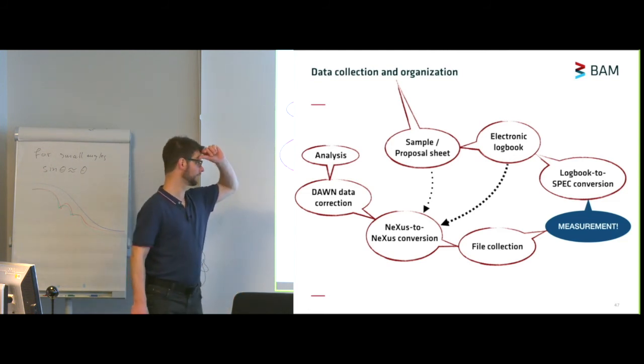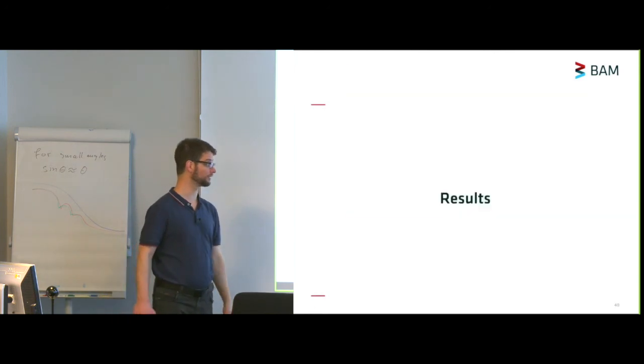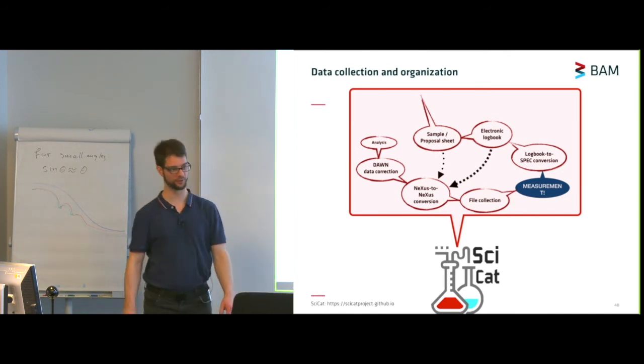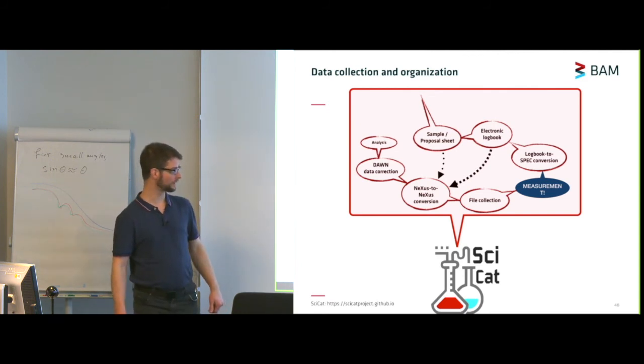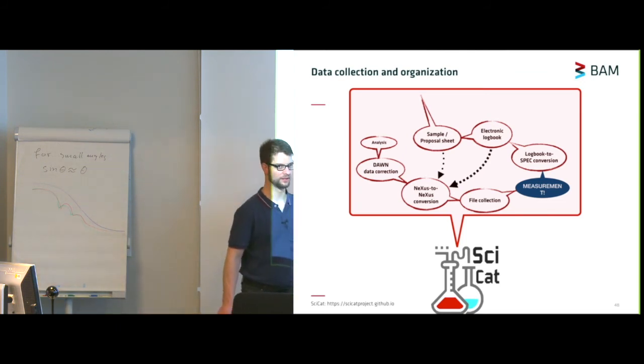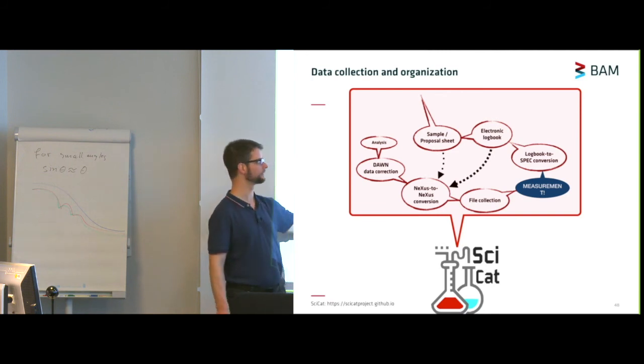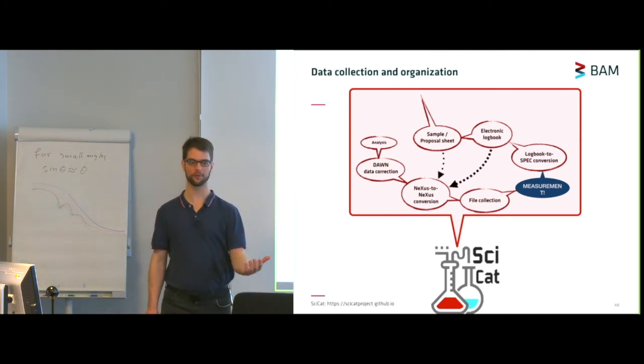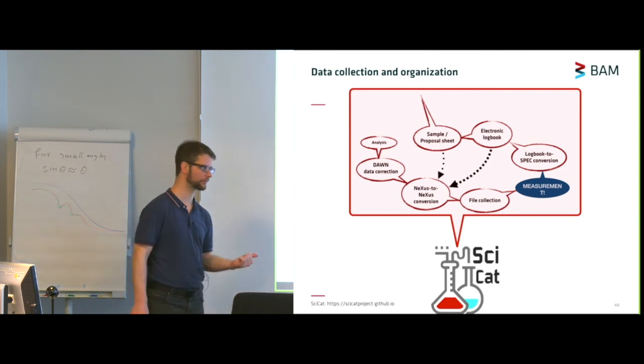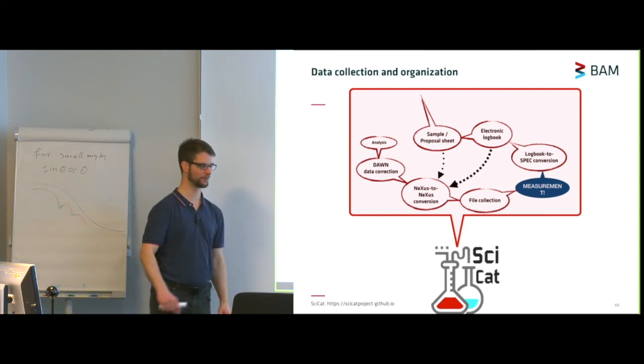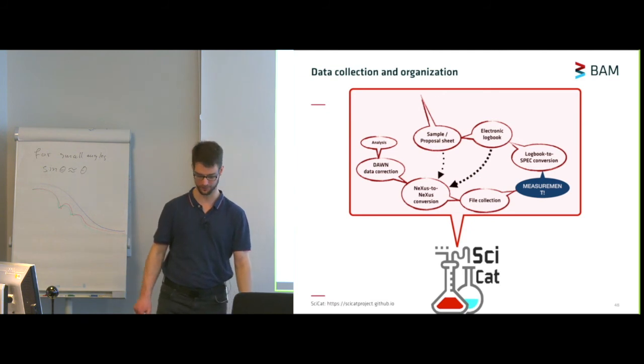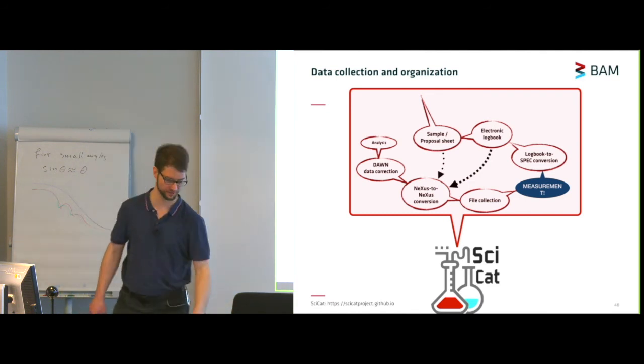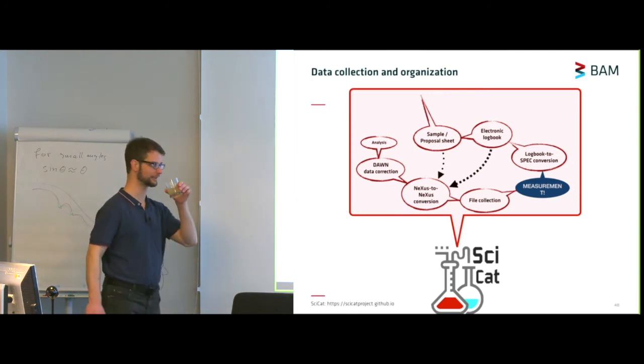Now, the actual measurement, we don't need to be there. This is usually done overnight or over the weekend, sometimes also over holidays depending on how many samples we can load up at once. That creates a number of files, a number of Nexus files and some text files. We collect all of the files and using another Python script, we do a Nexus to Nexus conversion to make a Nexus file which contains more information than what we initially get out of the instrument. We feed in some information from the electronic logbook and we're planning to feed in additional information from the sample proposal sheet, in particular on the sample composition and the density. We then do the data corrections in Dawn. This is, at the moment, mostly automatic. You load your files, you press go and it runs. And then you can do your analysis. Now, there's a lot of work being done here and part of this work we're now storing inside a database. This is the SCICAT database. It's a measurement catalogue which is under development at the moment at the European Spallation Source in Sweden.